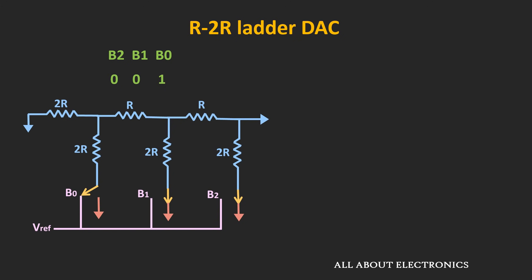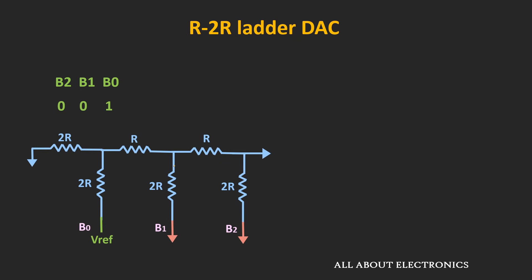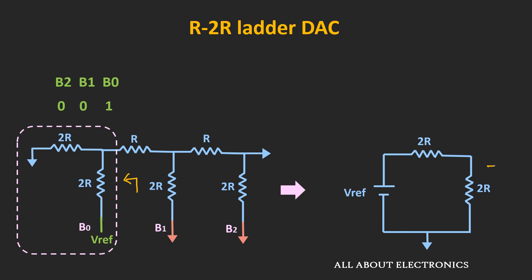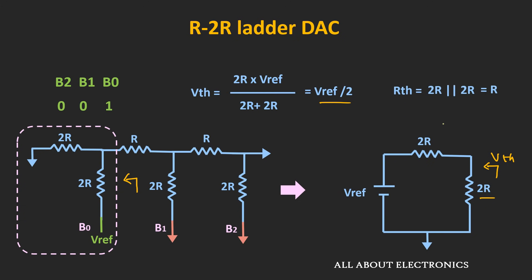Let us find the output whenever the input code is 001, meaning only B0 is 1. We find the Thevenin's equivalent circuit for the relevant portion. The Thevenin's equivalent voltage Vth equals 2R divided by (2R plus 2R) times V_reference, which equals V_reference divided by 2. To find the Thevenin's equivalent resistance, we set V_reference to zero, giving the parallel combination of the two resistors: 2R in parallel with 2R, equal to R.